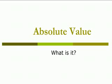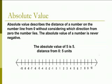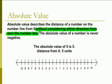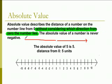This video will be over absolute value. What is absolute value? Absolute value describes the distance of a number on the number line from zero, without considering which direction from zero the number lies. The absolute value of a number is never negative. It does not matter whether from zero it goes to the right or to the left — positive or negative direction. That's what's important about absolute value.